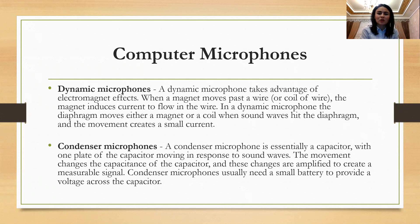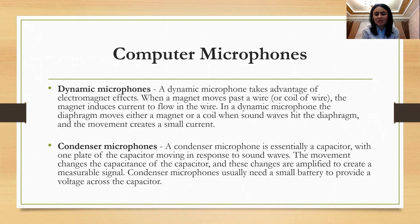In our previous sessions, we talked about types of microphones, so I will not be discussing it in detail this time — just giving you some key points. We have dynamic and condenser microphones. Dynamic microphones have the advantage of electromagnetic effects; the diaphragm moves either a magnet or a coil when sound waves hit it, and that movement creates a small current. Condenser microphones are essentially a capacitor with one plate moving in response to sound waves, and they usually need a small battery to provide the voltage across the capacitor.